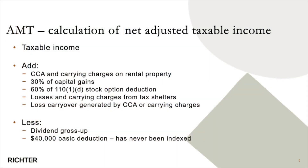The calculation of AMT is quite complex but we'll try to break it down. You start with your regular taxable income, to which you have reduced deductions, reduced exemptions, reduced carrying charges. So you add CCA and carrying charges on rental property, notably interest expense. 50% of your capital gains is already included in your taxable income, and for AMT purposes you add 30% of the capital gain — so it's effectively included at 80% under the AMT regime.